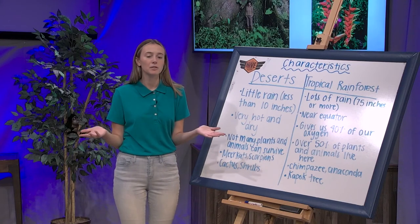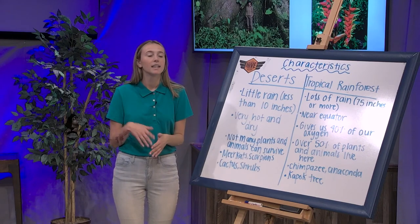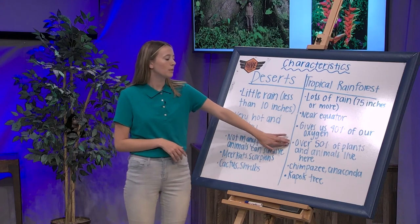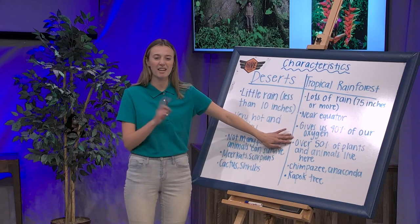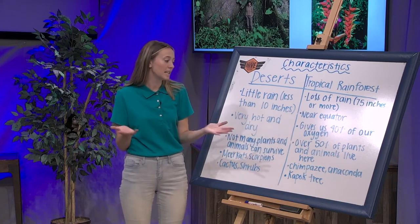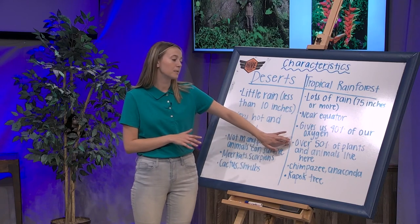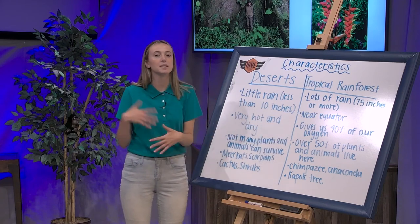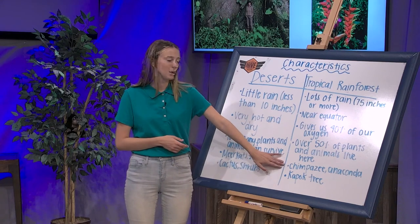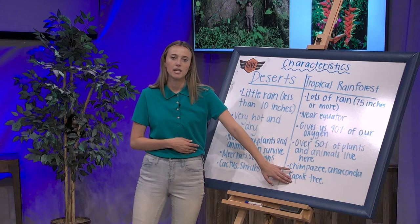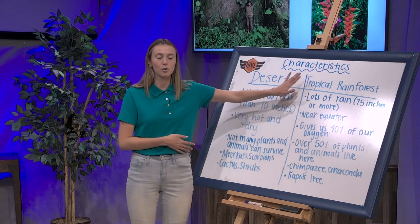We're back. Let's compare notes. I wrote that over 50% of plants and animals live here in the tropical rainforests — really important. Because of the climate, it's humid, it rains a lot, and over 50% of the plants and animals have the necessary nutrients they need to live there. I also wrote some examples: chimpanzee, anaconda, and kapok tree. Maybe you wrote more. That's okay, as long as they're animals and plants that live in tropical rainforests.